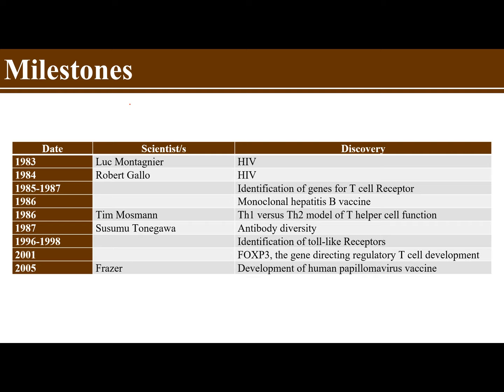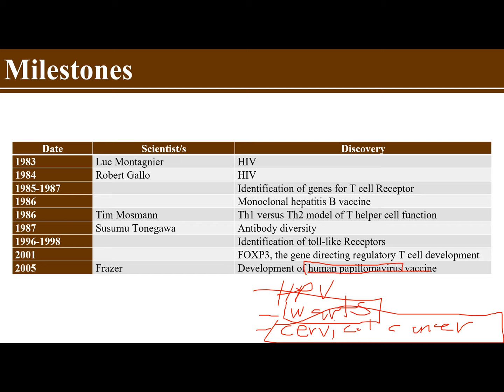In 2005, Fraser discovered the development of the human papillomavirus vaccine. This human papillomavirus, also known as HPV, is known to cause warts and cervical cancer. That is why it is recommended for both ladies and gentlemen to get this vaccine to prevent the development of warts and, for women especially, cervical cancer.